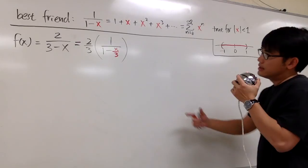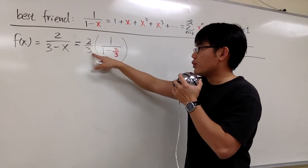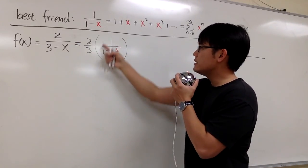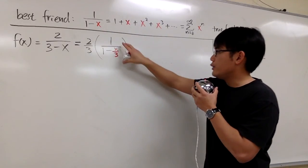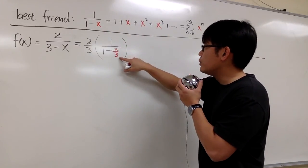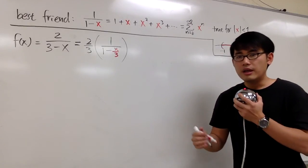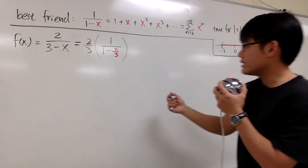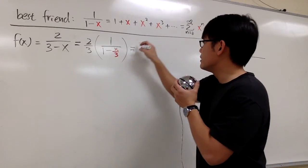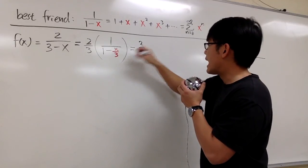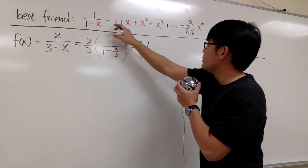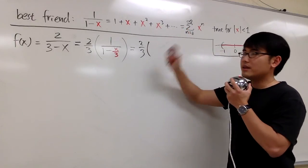And it's pretty much just like 2/3 all the way in the front. This is the place that we can apply our best friend. And you can just plug in x/3 into all this x to write it out, the expanded version. And I can do that right here real quick. This is 2/3 times this, where the x is going to be x/3.